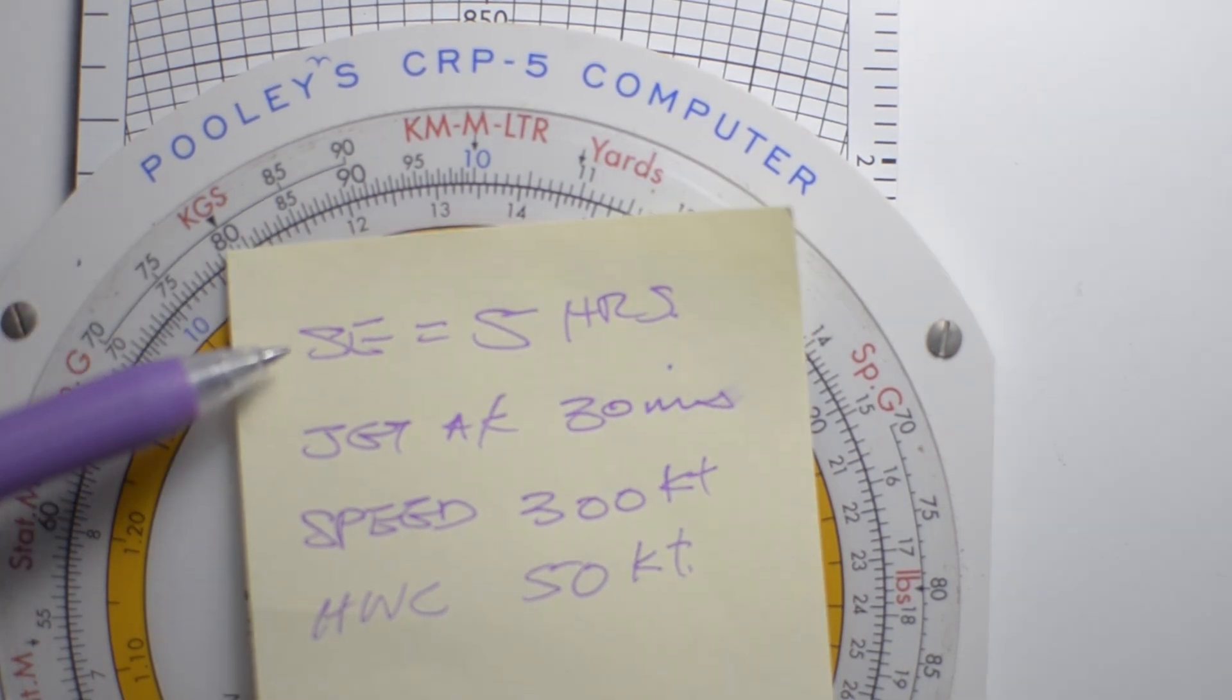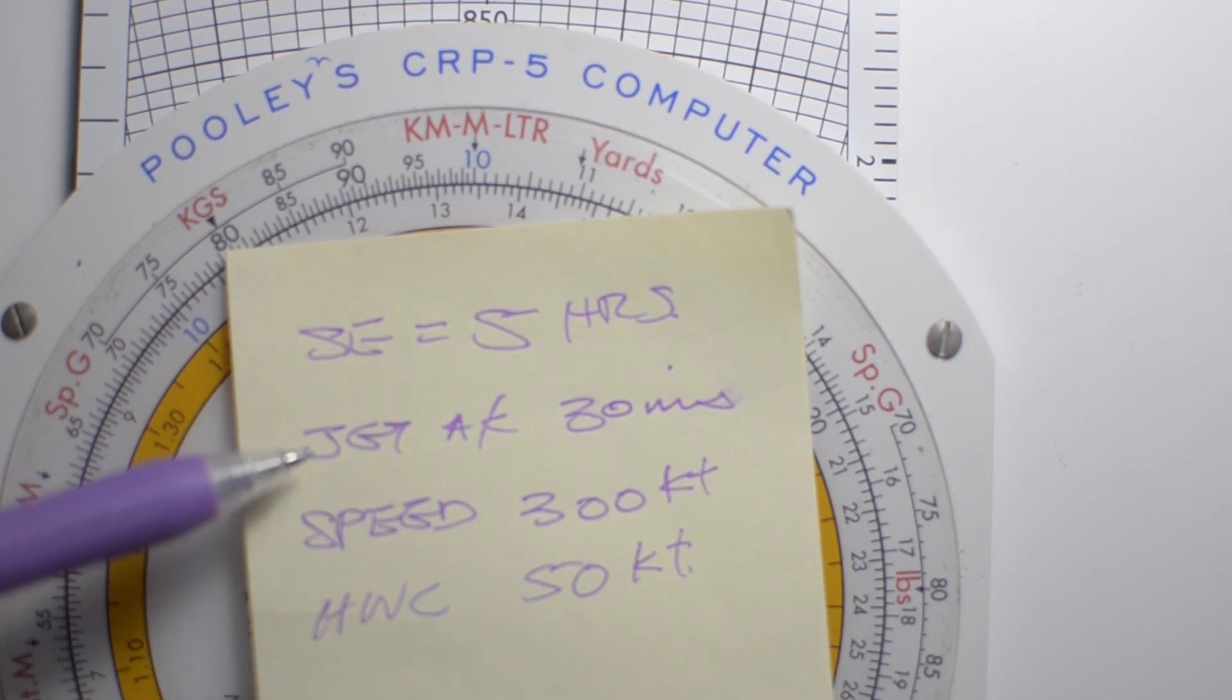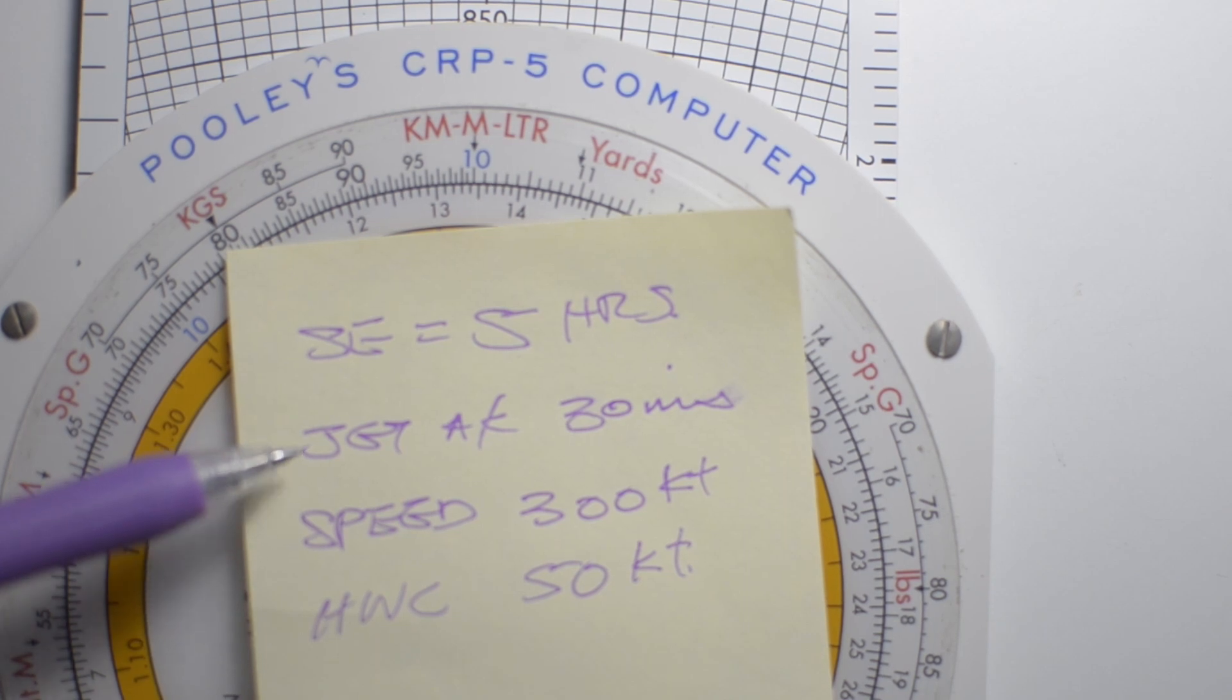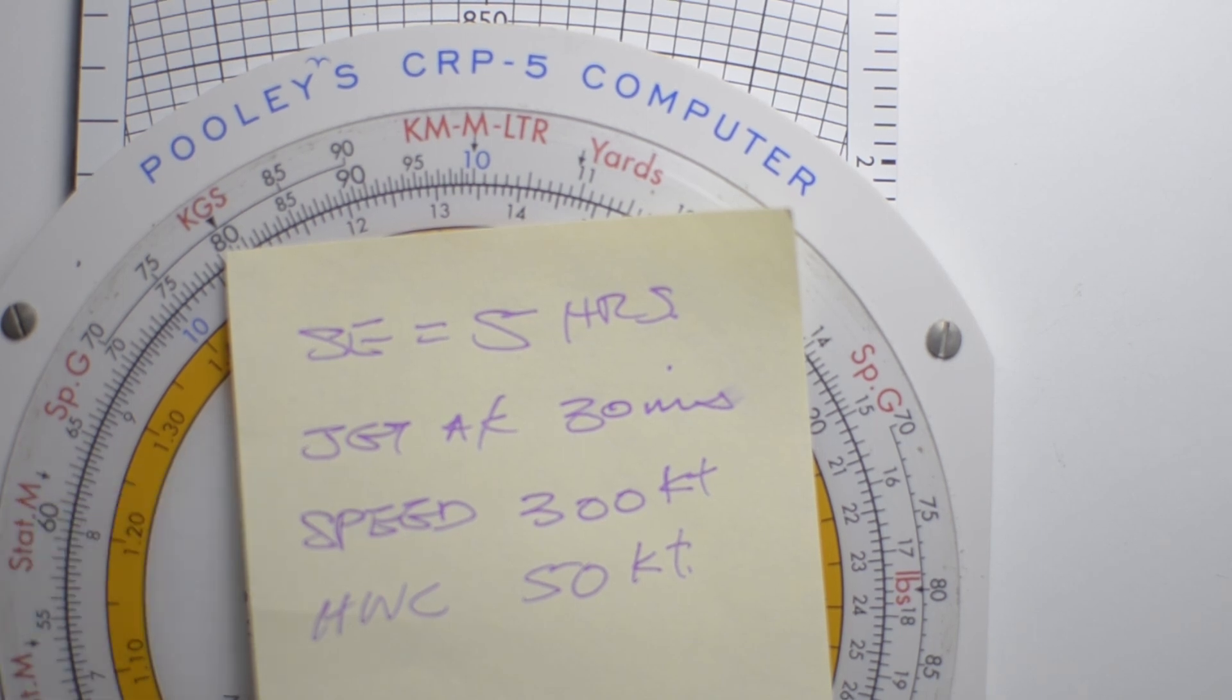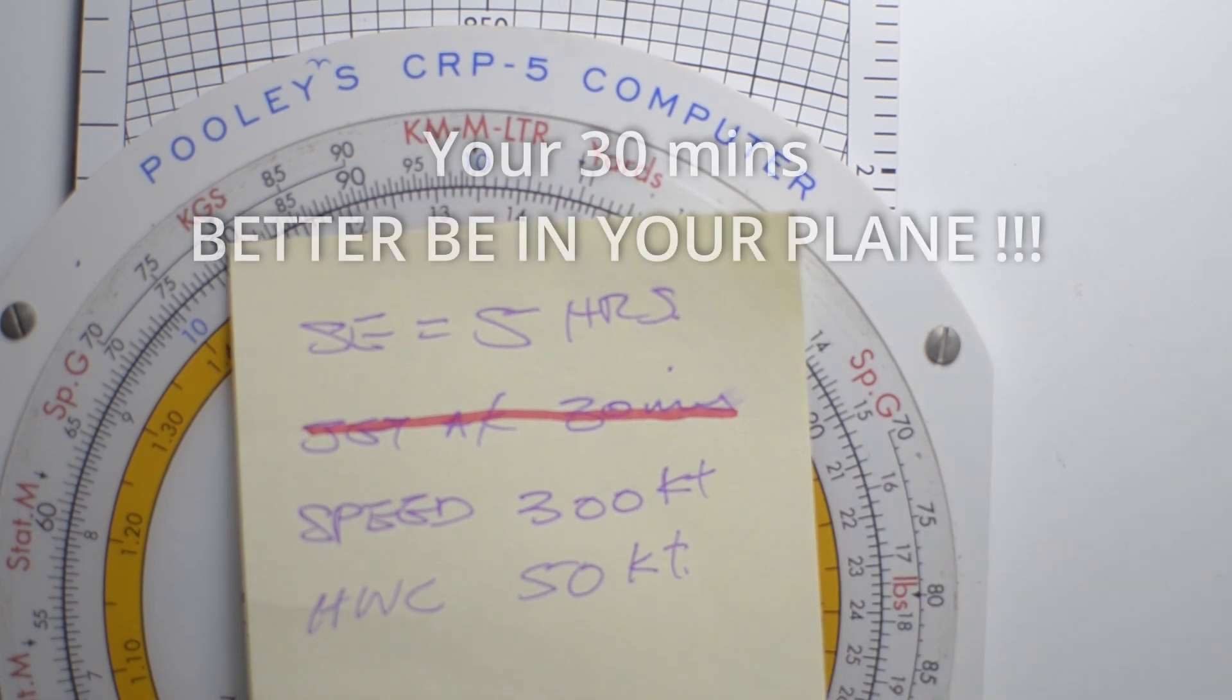Now the safe endurance of 5 hours simply means that we can fly for 5 hours before we will start to consume our mandatory reserve of 30 minutes, and we're not supposed to be consuming the mandatory reserve without good reason.